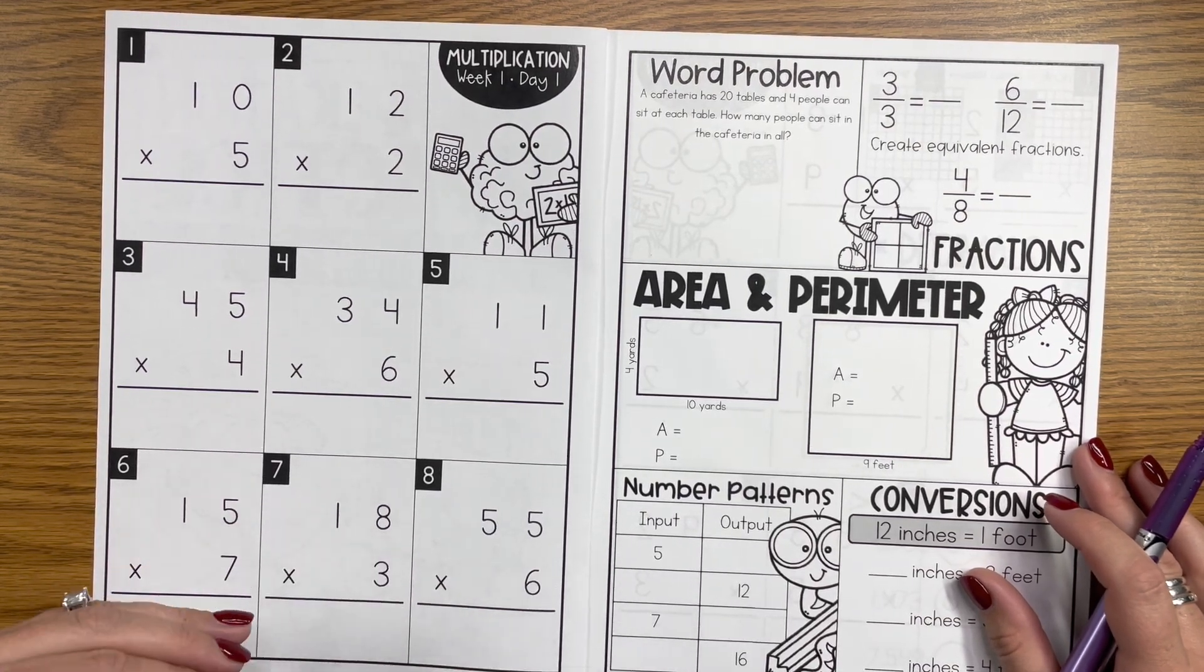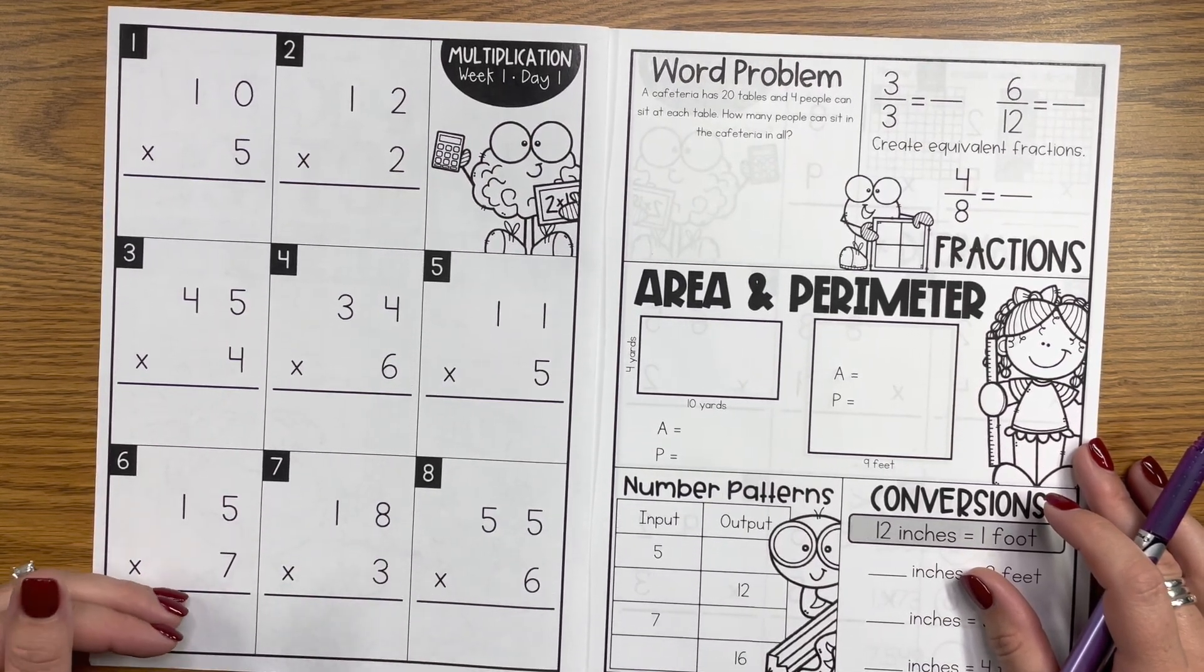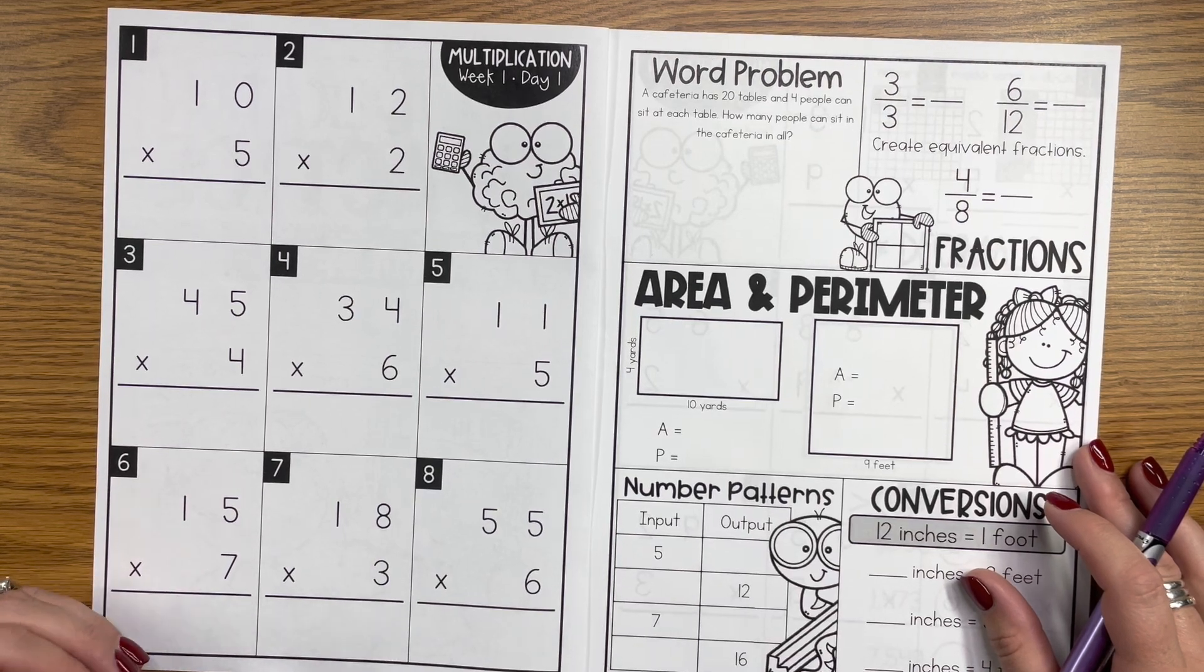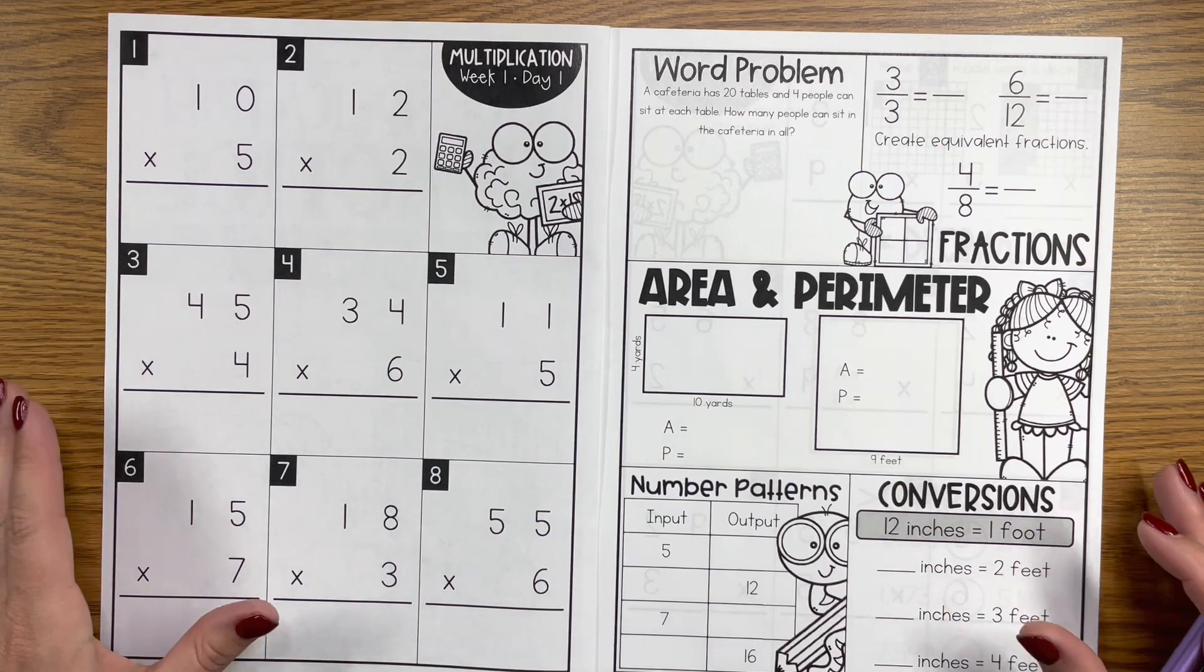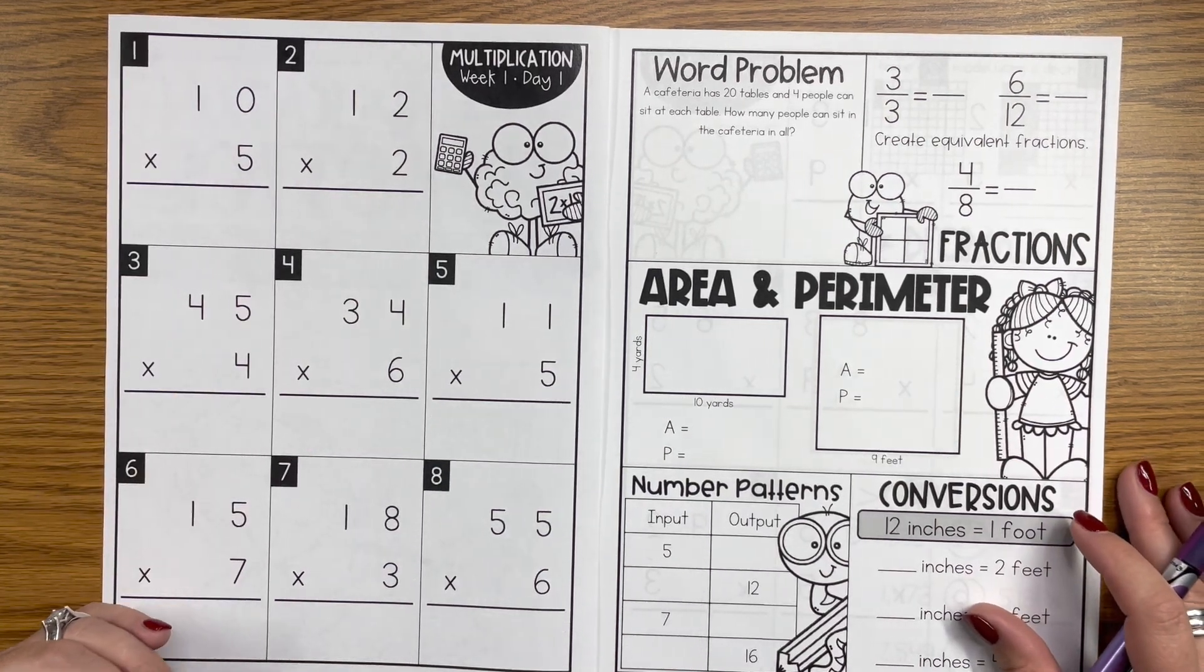My kids use their multiplication chart to solve the problems. You could certainly use things like partial products or the area model, some of these other strategies to solve these problems.